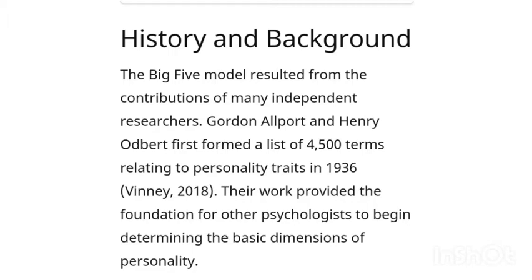The Big Five factor resulted from the contribution of many independent researchers. Gordon Allport and Henry Odbert first formed a list of 4,500 terms relating to personality traits in 1936. Their work provided the foundation for other psychologists to begin determining the basic dimensions of personality.